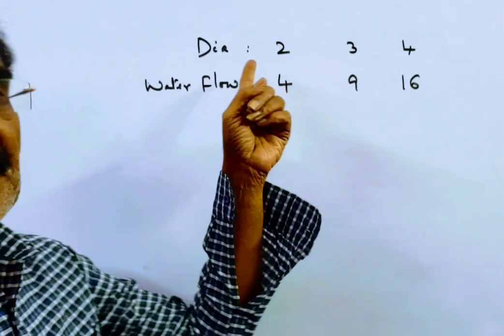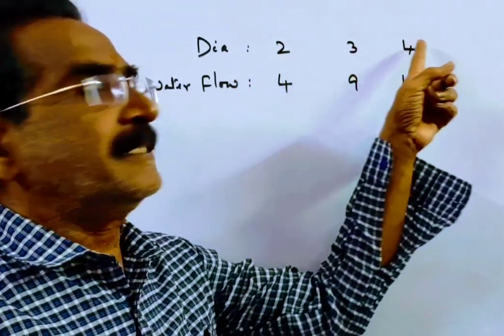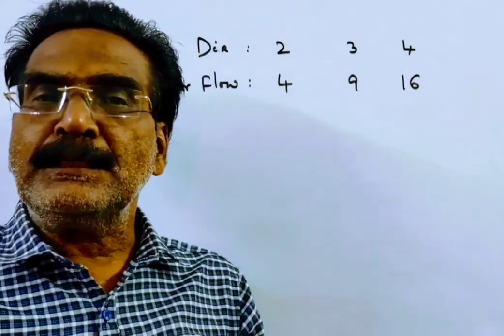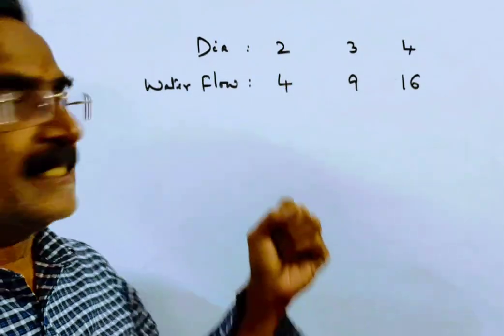See friends, there are three pipes whose diameters are 2 centimeters, 3 centimeters and 4 centimeters and the water flowing through these three pipes are the squares of the diameters.